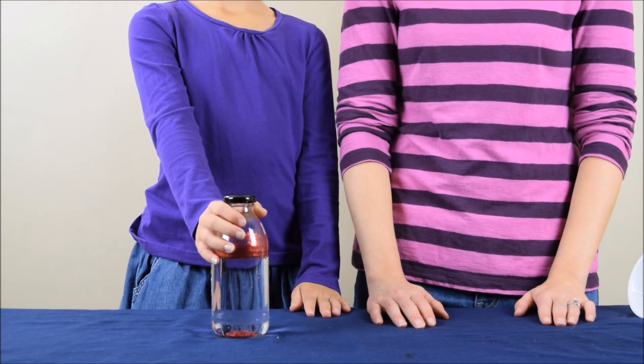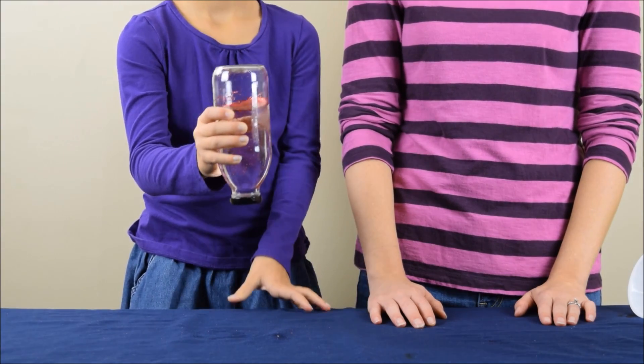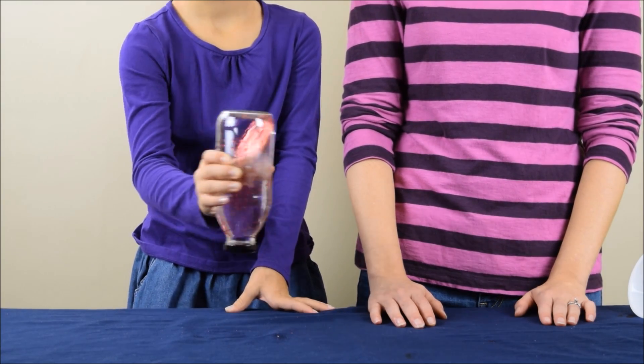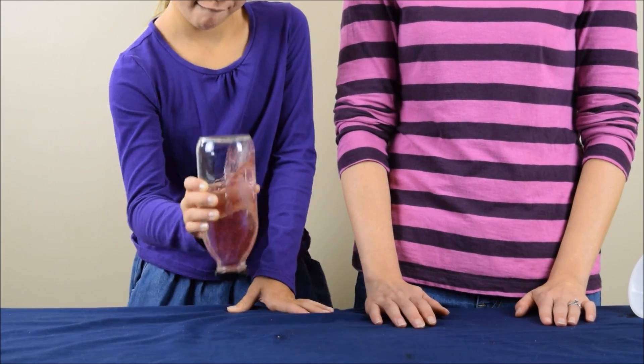Now it's time to make the tornado. So go ahead and flip the bottle upside down, and shake it in a circular motion, really fast, and then stop.